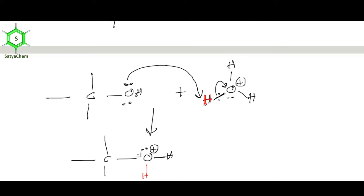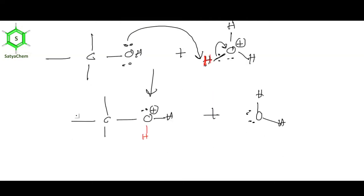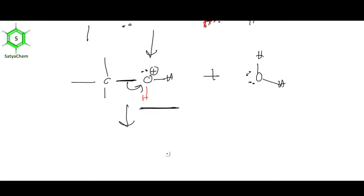Now oxygen bears three bonds again, so we put a positive charge on it. Water is a very good leaving group because it is neutral. Water withdraws the bonded electron pair from the C-O bond, and the carbon becomes a carbocation. That is how we can generate a carbocation from an alcohol. There are a number of other pathways by which you can get carbocations.